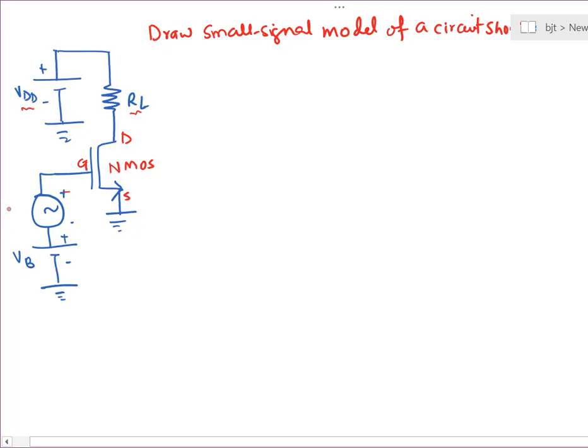Let's call it Vs superimposed over a DC bias Vb. Now the question is we are asked to draw the small signal model of the circuit. Remember, the small signal model helps us to understand the AC response or the frequency response of the circuit.